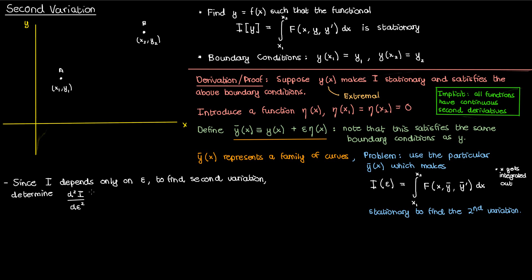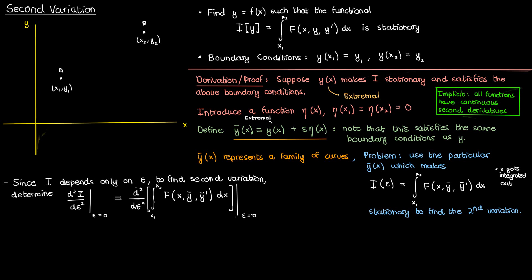I want to determine the second variation corresponding to the function that makes i stationary, and I get that function by setting ε to zero. Remember, the function y(x) was already assumed to be stationary beforehand, so when ε equals zero the particular curve we end up with for y-bar is our stationary function y. The rest of the procedure in finding the second variation is quite similar to what we did for Euler-Lagrange: we substitute the expression for i in terms of the integral, differentiate that integral expression twice with respect to ε, and find the second variation.